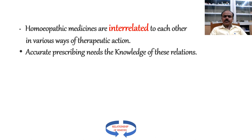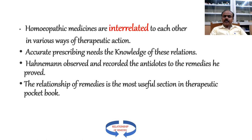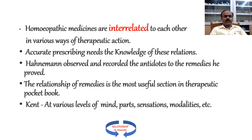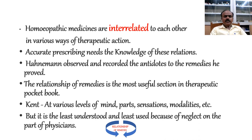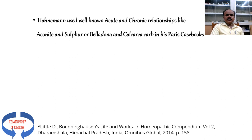Hahnemann observed and recorded the antidotes to remedies he proved, which we can find in his Organon of Medicine. The relationship of remedies is the most useful section in the Therapeutic Pocketbook of Boenninghausen. In Kent's Materia Medica, we find at various levels of mind, parts, sensations, and modalities where Kent talks about the relationship of remedies.